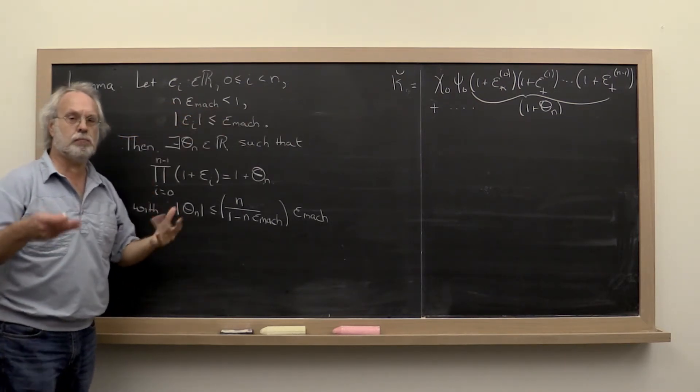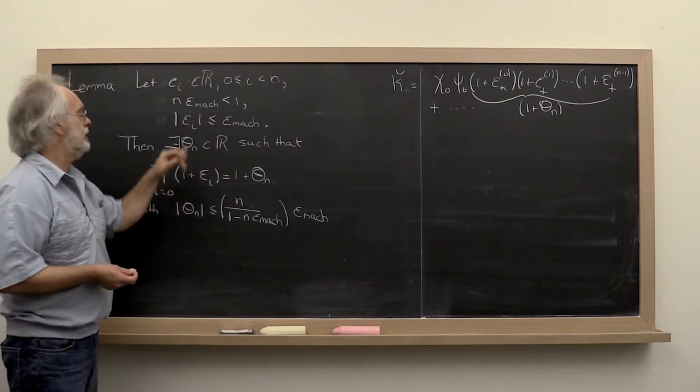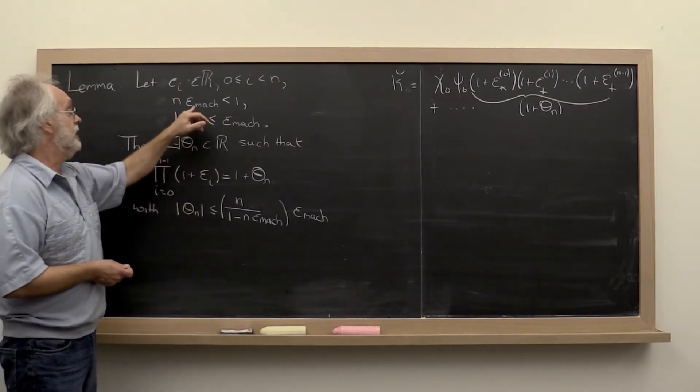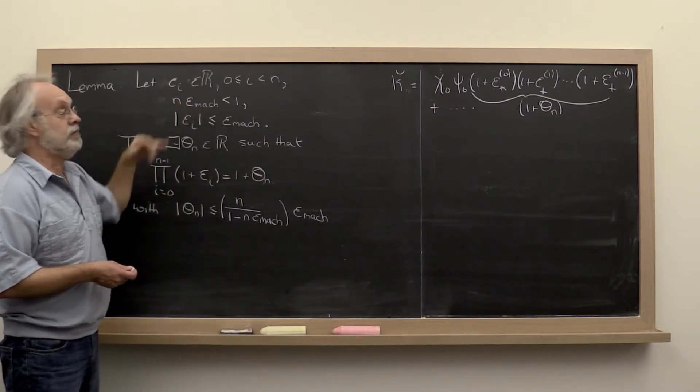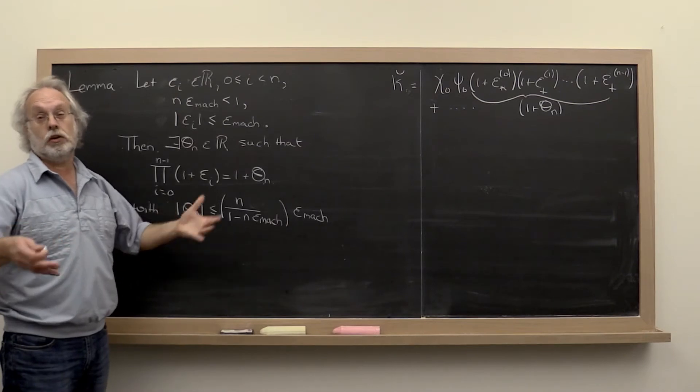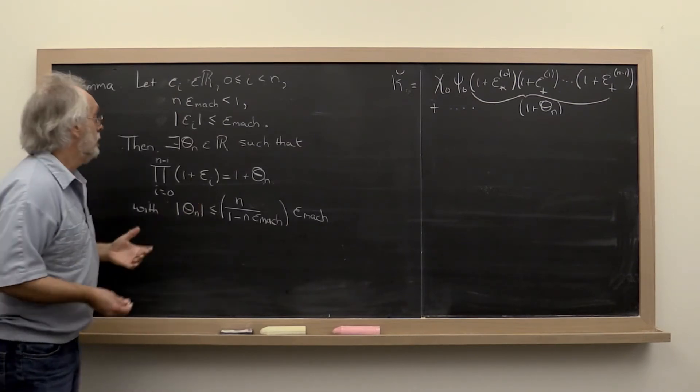Because the machine epsilon, even if you just use single precision, is 10 to the minus eighth. So n could be as large as 10 to the eighth, which is a pretty long vector.